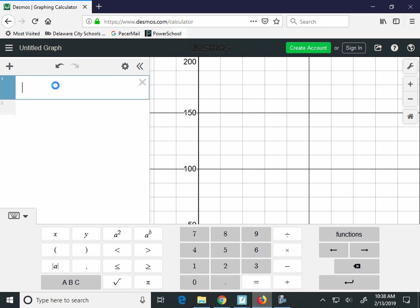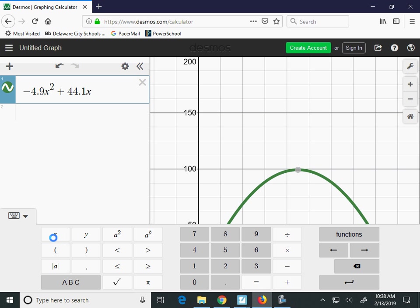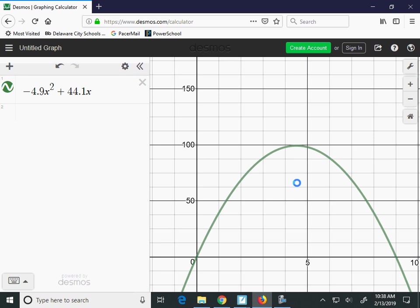So on Desmos, you're going to type in your function here, negative 4.9. Now you need to use x's, you can't use the t's, plus 44.1x. When I look at my graph here, all I have to do is click on the vertex. And I get a vertex at 4.5, 99.225.